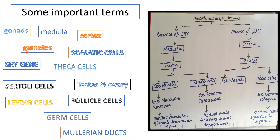Gametes are mature haploid male or female germ cells. Regarding germ cells and somatic cells: somatic cells make up all internal organs — skin, connective tissues, bone, blood. Germ cells, on the other hand, give rise to ova and spermatozoa, which ultimately fuse to form a zygote — meaning germ cells are involved in the process of reproduction, while somatic cells are not.